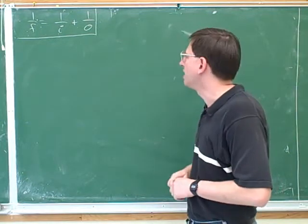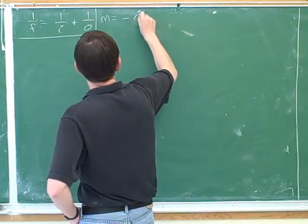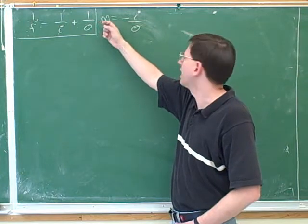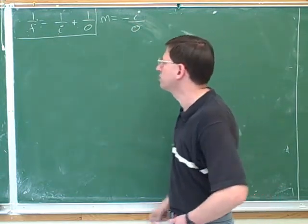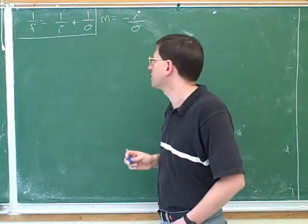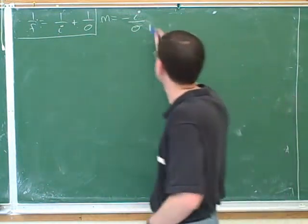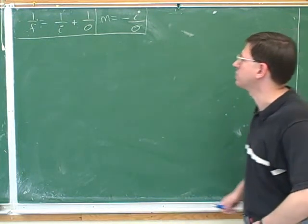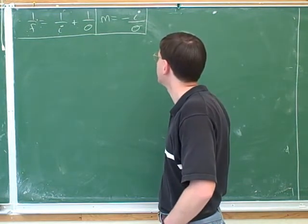So this is the lens-mirror equation. There's another important equation: the magnification equation. Let's make sure we know what all these variables stand for. M is magnification. I is image distance — the distance between the image and the lens or mirror. O is object distance — the distance between the object and the lens or mirror. And f is focal point distance — the distance between the focal point and the lens or mirror. It's important to include the negative sign to get the correct answer: M = -I/O.